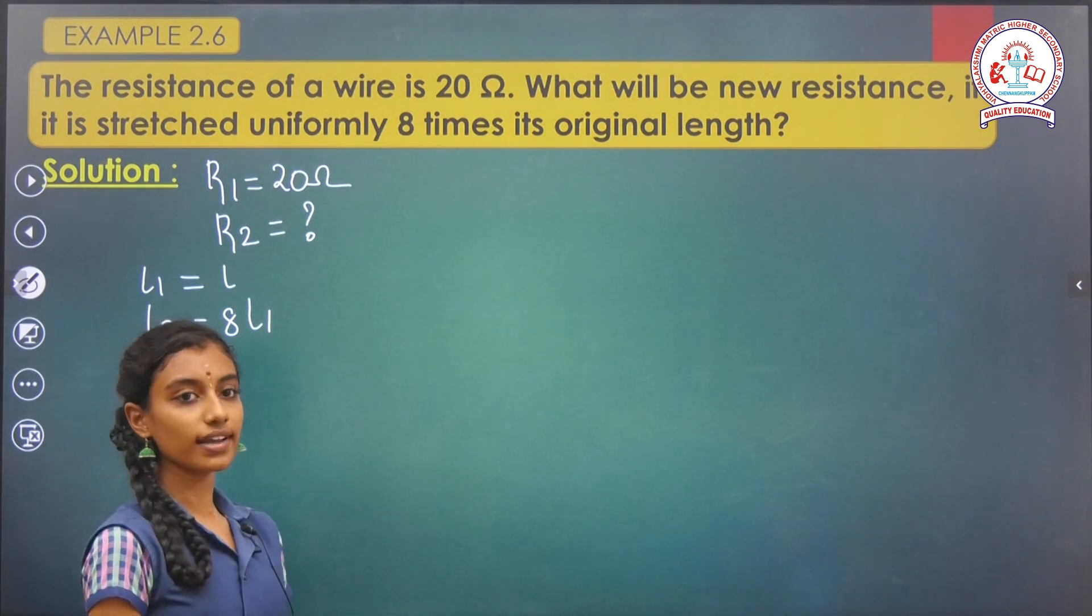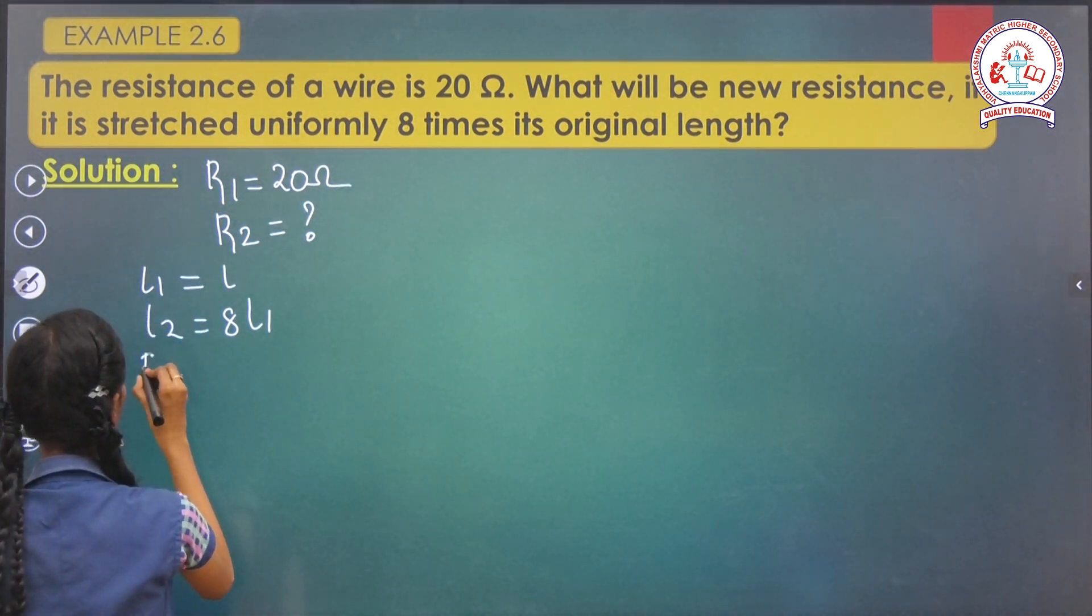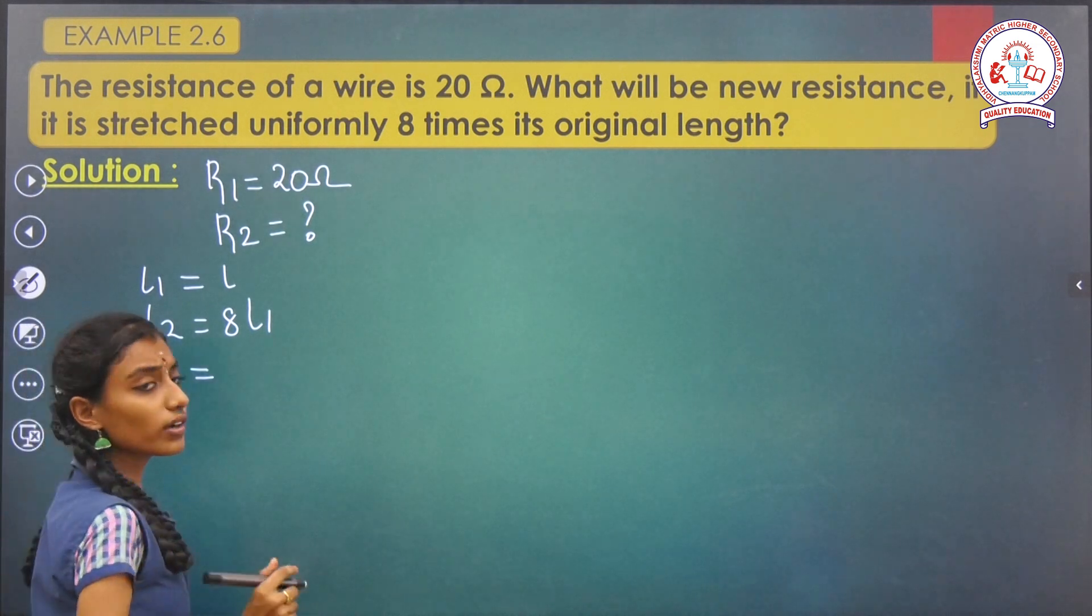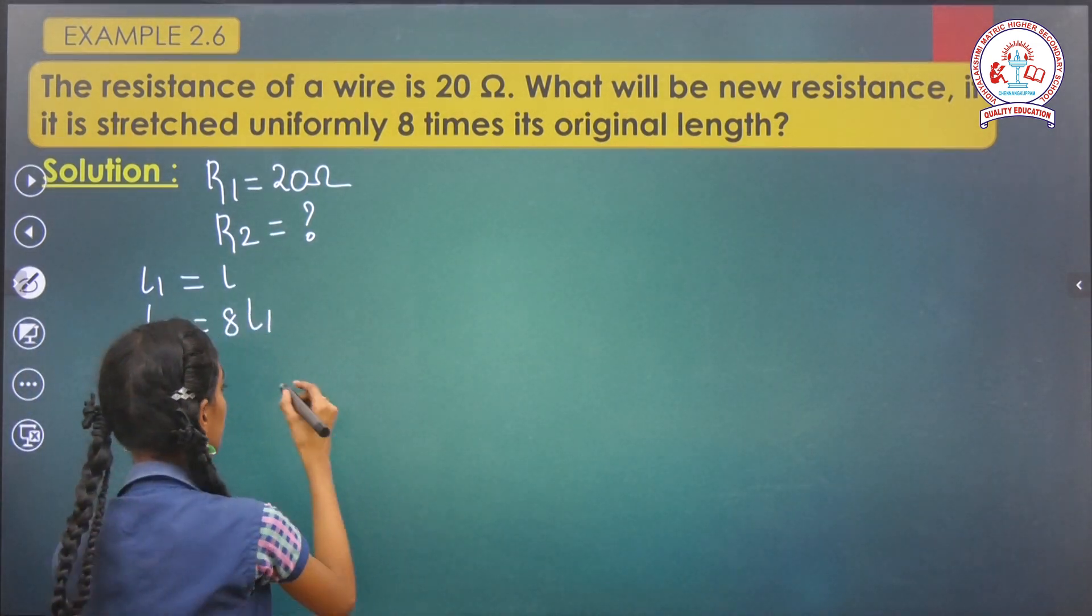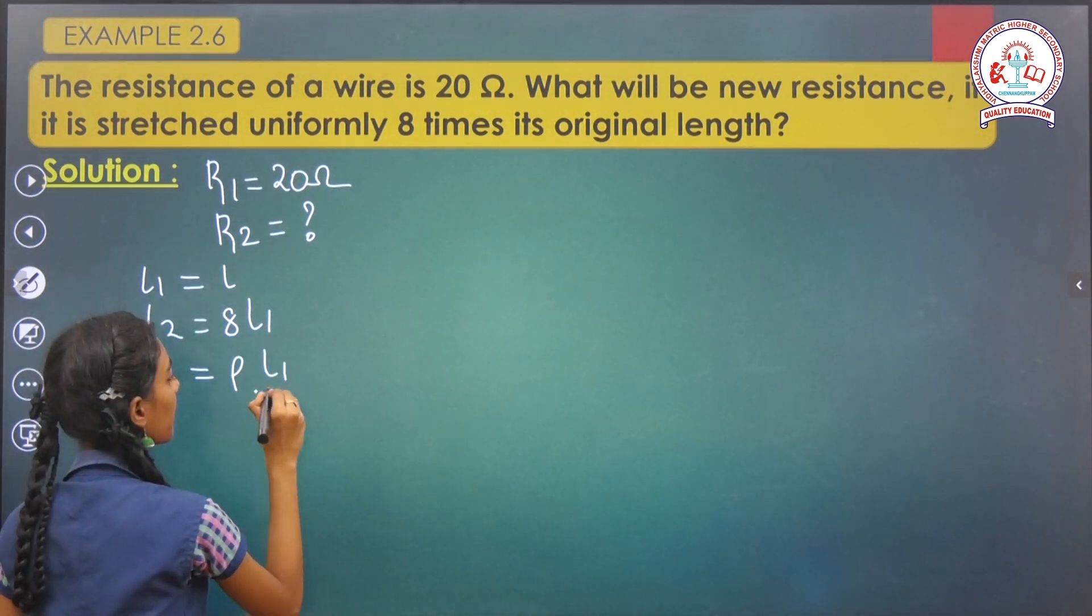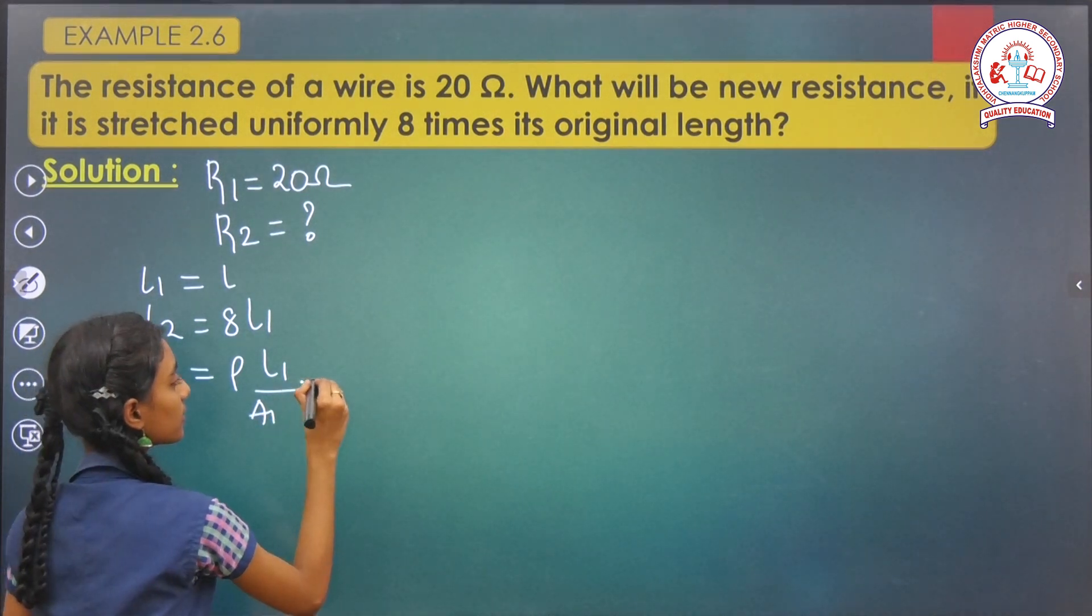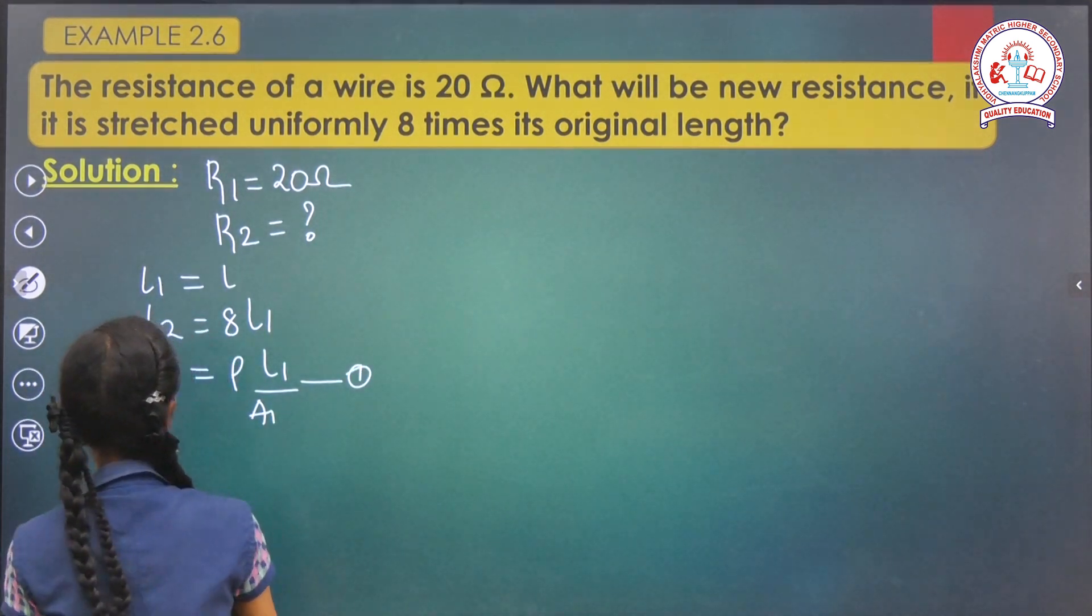The original resistance is determined by R1. R1 equals, we already know that R1 equals ρL1 by A1. This is equation number 1.